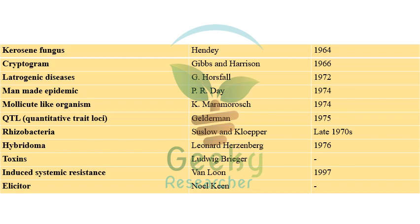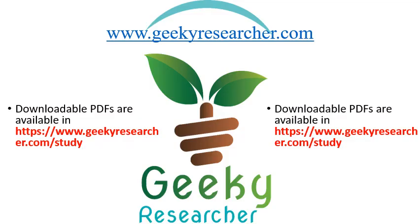'Iatrogenic diseases' by Horsfall in 1972. 'Man-made epidemic' by PR Day in 1974. 'Molecules-like organism' by Maramosch in 1974. 'QTL' (Quantitative Trait Loci) by Geldermann in 1975 — important to know the full expansion. 'Rhizobacteria' by Suslow and Kloepper in 1978. 'Hybridoma' by Herzenberg in 1976. 'Induced systemic resistance' by van Loon in 1997. 'Elicitor' by Noel Keen, also considered father of molecular plant pathology. These are the terms and their related scientists, and we can expect one or two questions from this. Stay geeky, stay tuned — we are team Geeky Researchers.